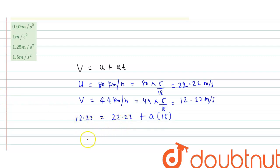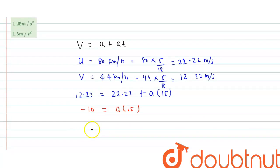Now, 12.22 minus 22.22 equals minus 10, which equals A into 15. So acceleration A is equal to minus 10 upon 15. That means this is equal to minus 0.67 meter per second square.